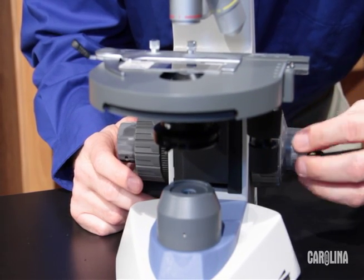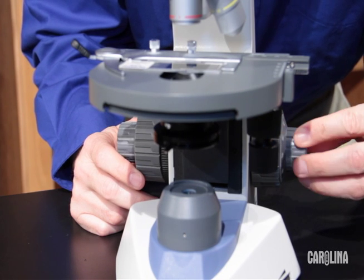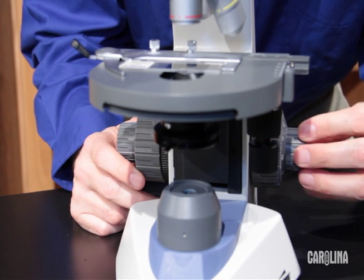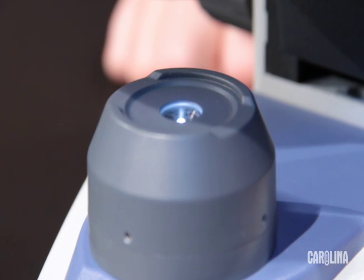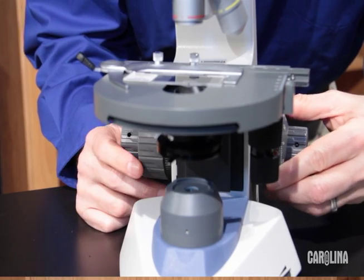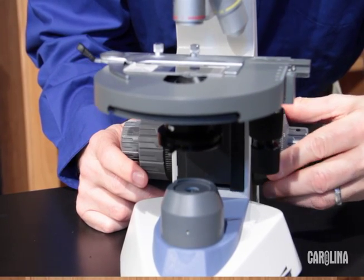Turn the coarse focus knob until the image is in focus then turn the fine focus knob to fine tune the image. At this point you may need to adjust the light to improve the image. After adjusting the light you also need to adjust the focus one more time.